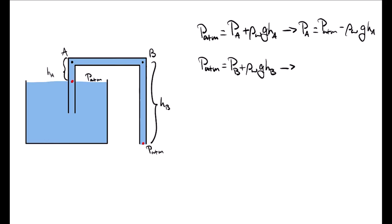And solving for the pressure at point B, we will get that P_B is equal to the atmospheric pressure minus rho G H.